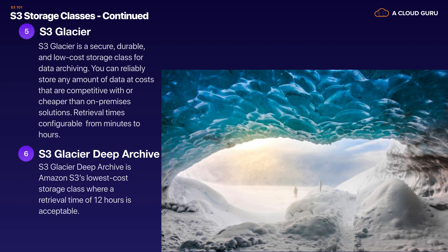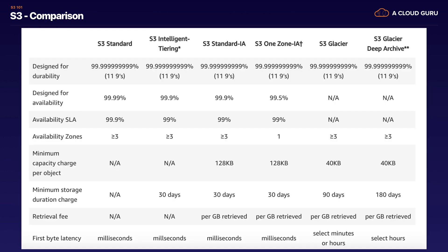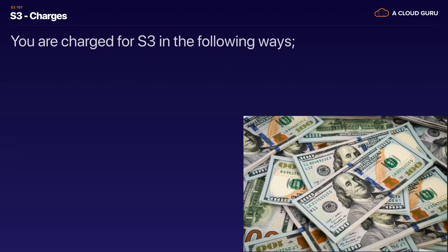Those are the six different storage tiers, and you will need to remember those going into your exam. Here is a table that compares the different storage tiers. The thing to really note is the first byte latency — that's how quickly you'll be able to access your data. It's milliseconds for everything apart from S3 Glacier and Glacier Deep Archive, which can be minutes, hours, or up to 12 hours.